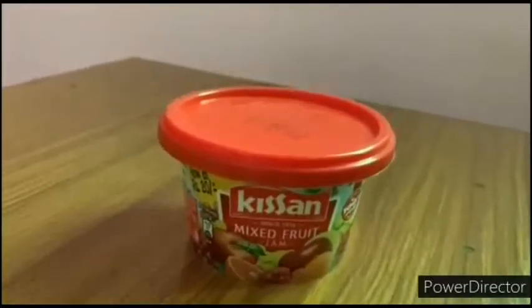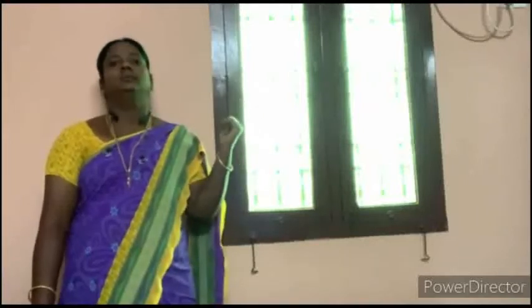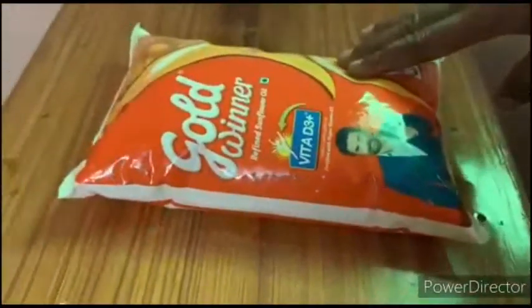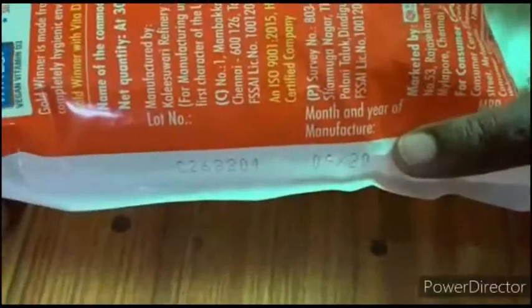Students, do you know that while purchasing packed food items, we should check the following details: first, the manufacture date; second, the expiry date; third, the ingredients of the food; and fourth, the energy content in the food material. Come on students, let's find out these details in sunflower oil. This is the manufacture date. See the expiry date — best before 6 months from manufacture. This is the ingredients of the oil. This is the energy content of this oil package.